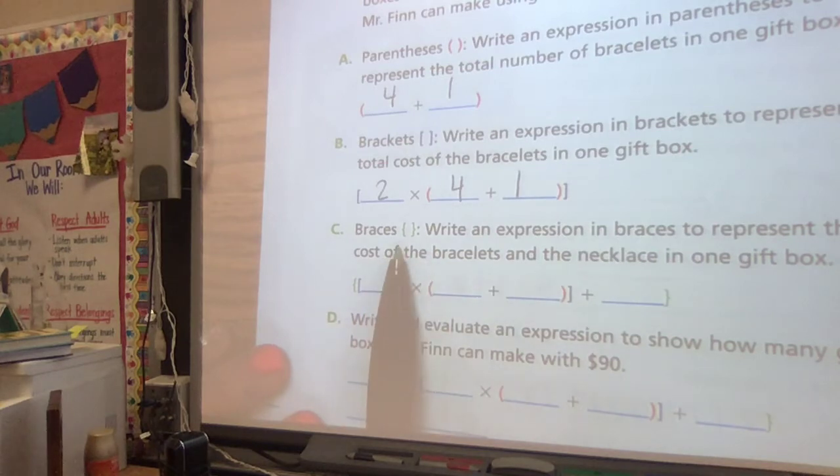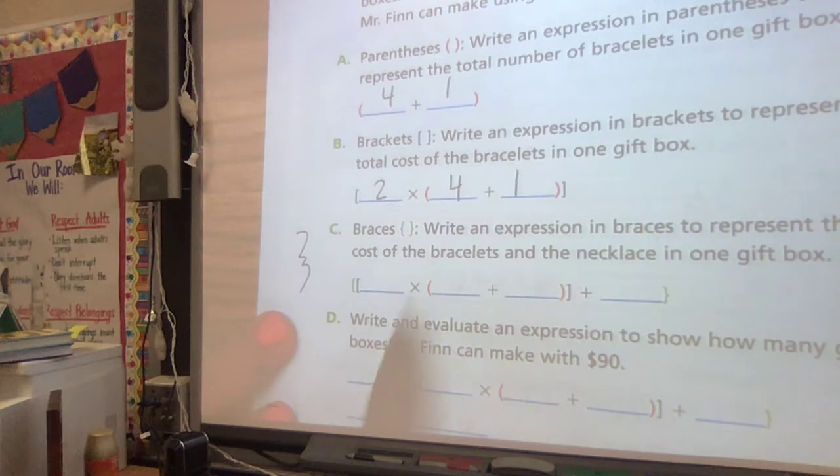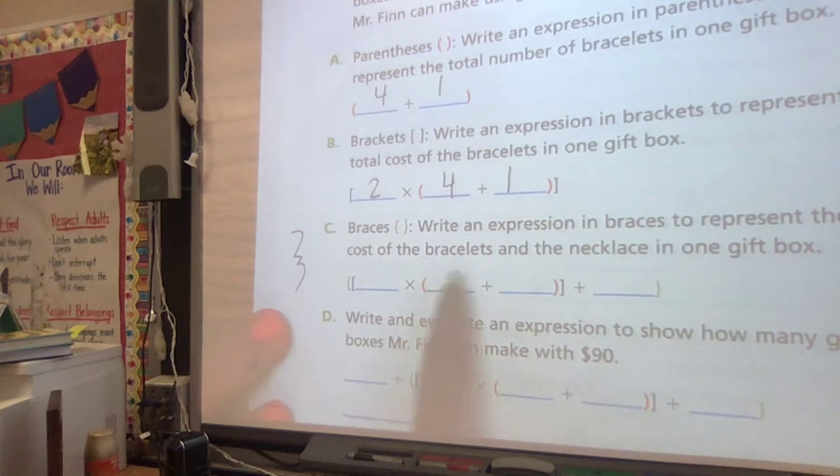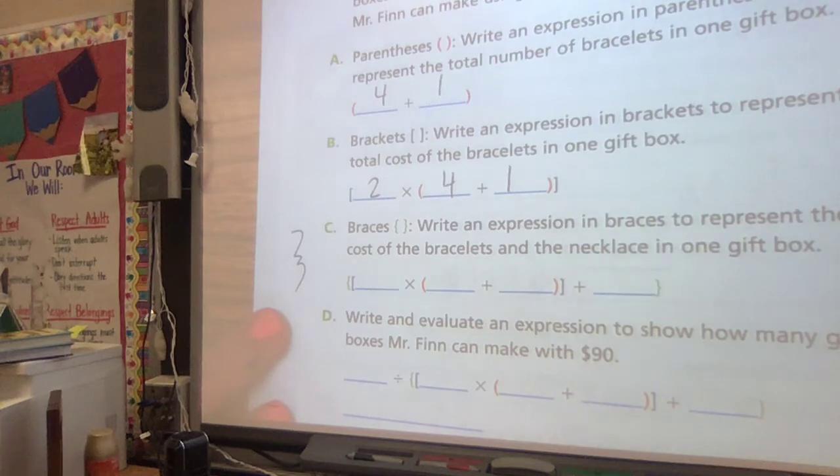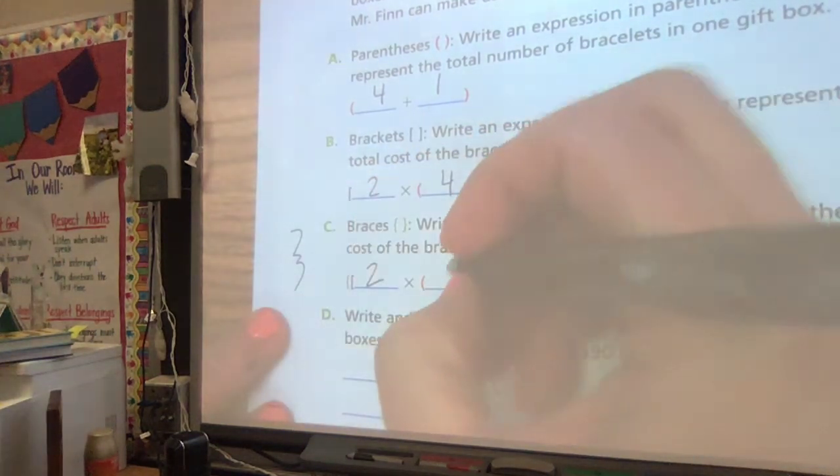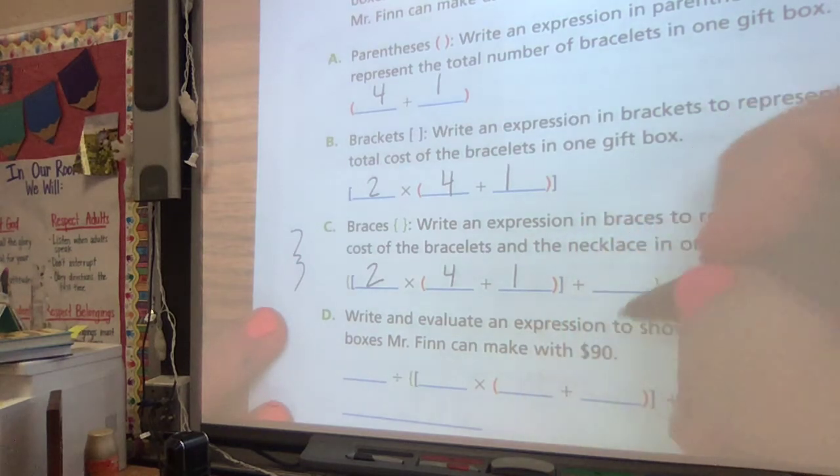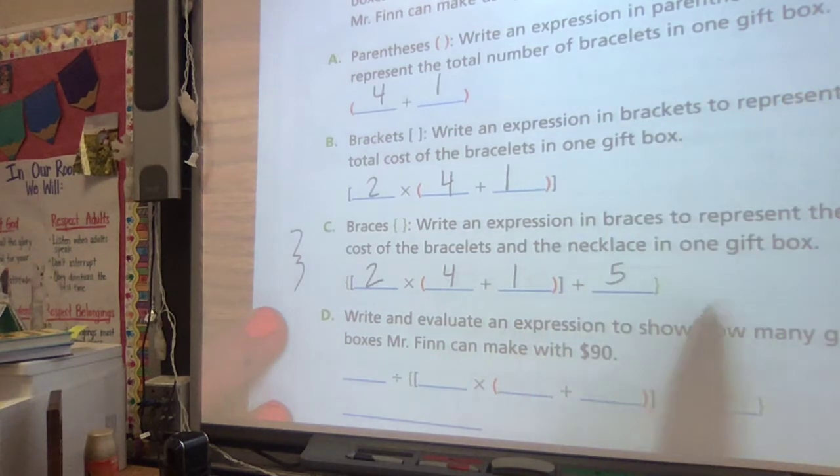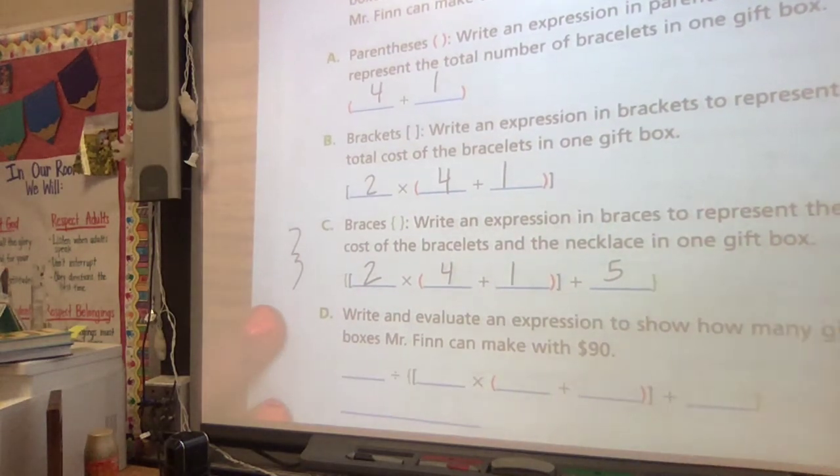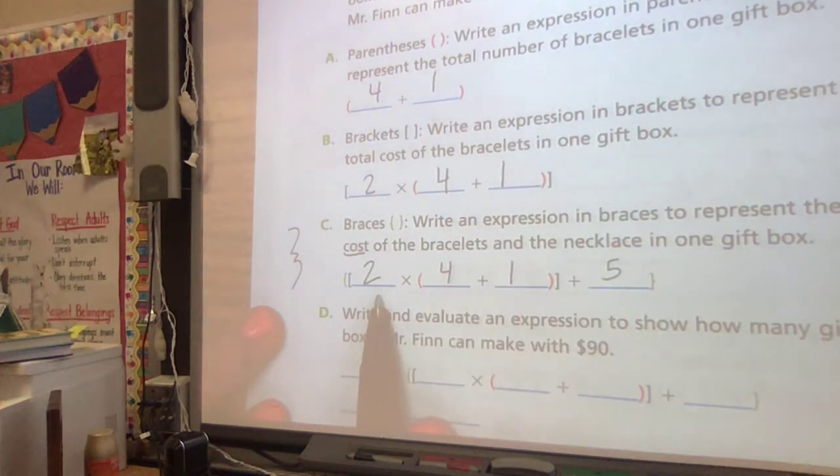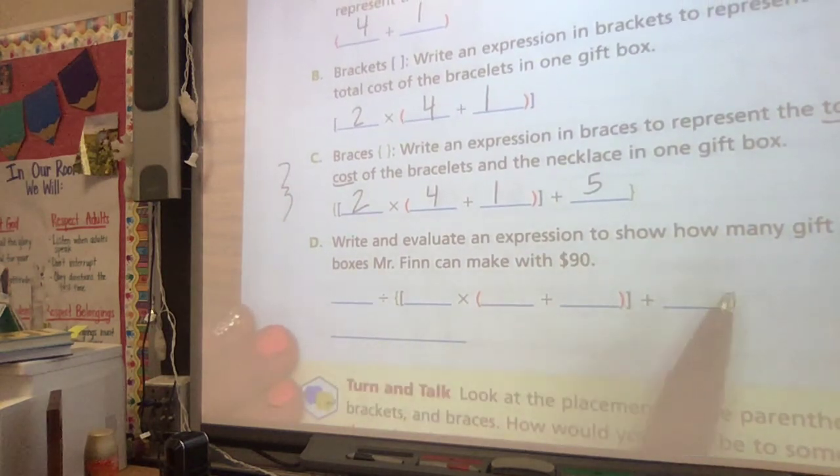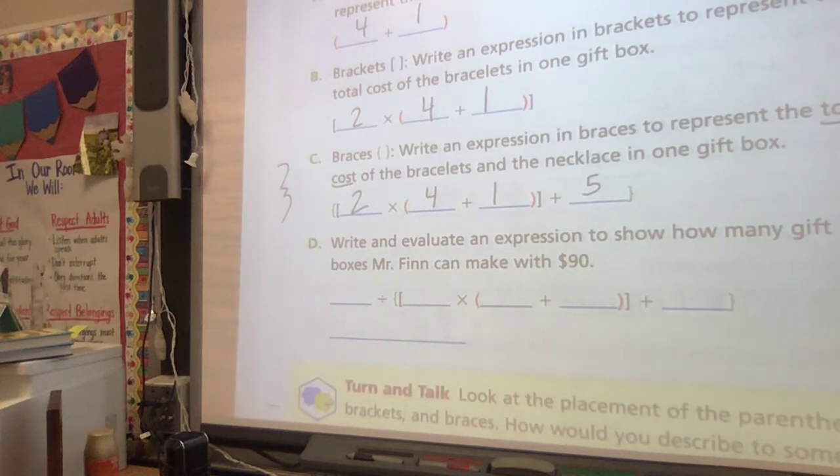Then you might also see braces, which are kind of fun to draw. Write an expression to represent the total cost of bracelets and the necklace. If we keep on doing that, we know that it costs $2 to make our bracelets and we've got one necklace that costs $5 because we're trying to represent the total cost. So we have 5 bracelets times 2 and we have one necklace, so that's just $5. So write and evaluate an expression to show how many gift boxes Mr. Finn could make with $90.